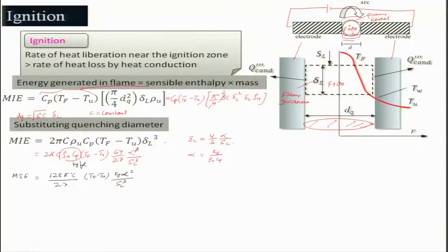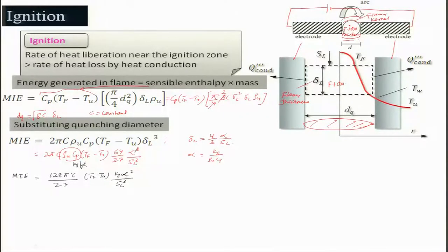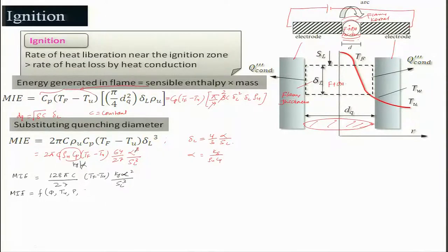MIE is a function of equivalence ratio φ, initial temperature T_u, pressure, and properties like k_g and α, as well as S_L. This analysis is valid only for a quiescent atmosphere — meaning there is no flow. To see how MIE depends on pressure: since α = k_g/(ρ_u·c_p), we can write MIE ∝ 1/(ρ_u² · S_L), and since S_L ∝ P^(n/2−1) and ρ_u ∝ P, MIE ∝ P^(−(3n/2−1)), where n is the order of chemical reaction.